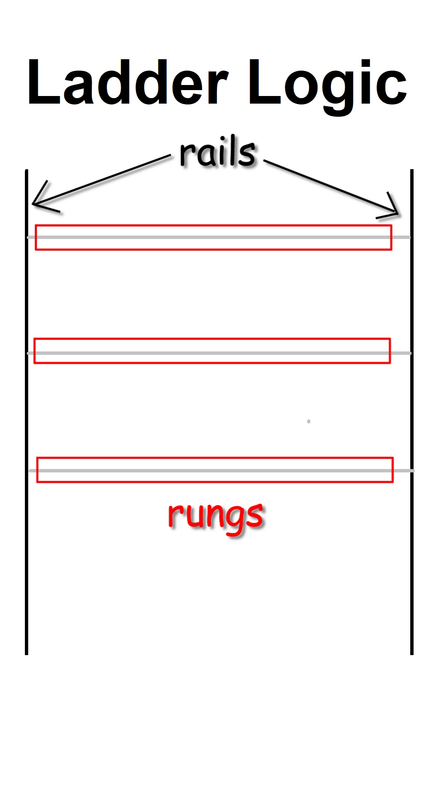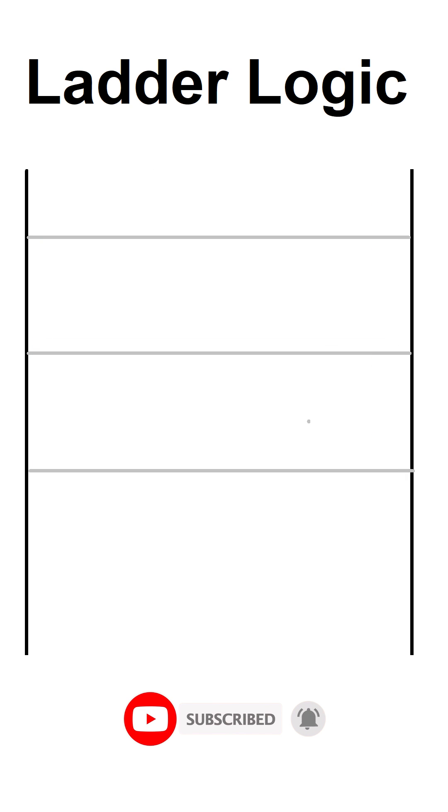because it looks like a ladder. Two vertical side lines are called rails and the parallel lines are referred to as rungs. Logic elements and the flow of the logic is always from the left to the right side.